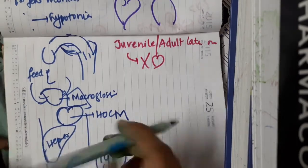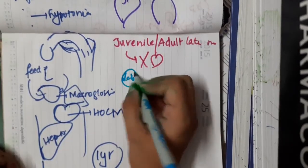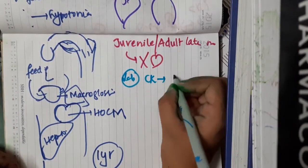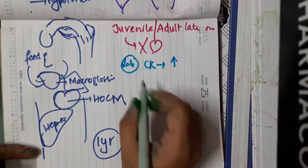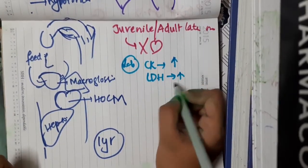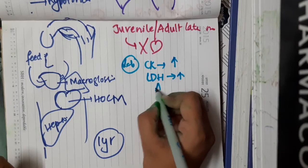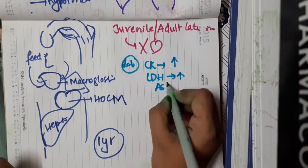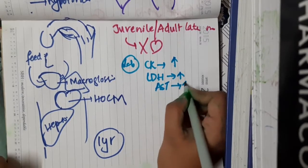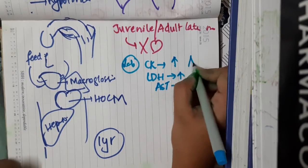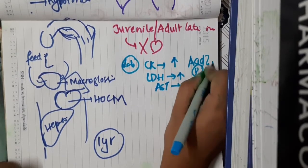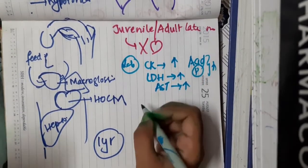Regarding lab diagnosis: serum creatine kinase levels are elevated. You can also see elevation of lactate dehydrogenase and aspartate transaminase. Even acid phosphatase is elevated in these patients.